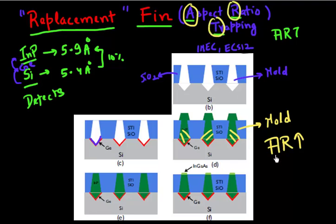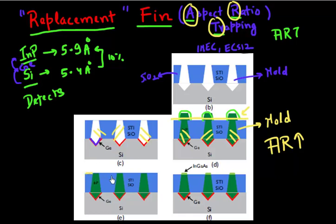Because if you have this high aspect ratio mold, it captures most of these defects within the mold, and your resulting film towards the top is defect free. So you use this approach to make these indium phosphide or any III-V fins. In this case they have overgrown it slightly, and then you come with a CMP step and polish it again. You are left with these indium phosphide fins embedded in silicon oxide, and then you can etch back and reveal the fins to whatever height you want.